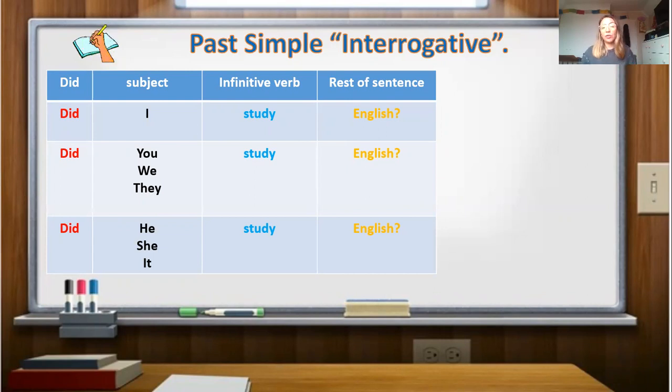After that, you have to include the subject. For example, in this case, personal pronouns. Did I? Did you? Did he? After that, after the subject, you have to include the infinitive verb. No present, no past, no future. Infinitive is neutral. Recuerden que el verbo infinitivo es un verbo neutro, que no está en presente, pasado ni futuro. And then, after, finally, we have to include the rest of the sentence. In this case, English. And the question mark. Con el signo de interrogación.